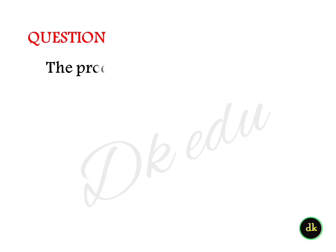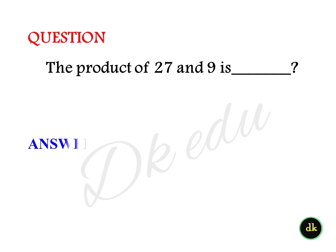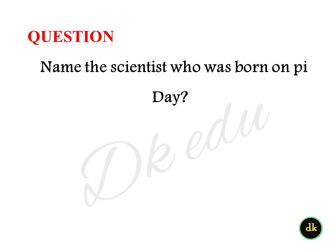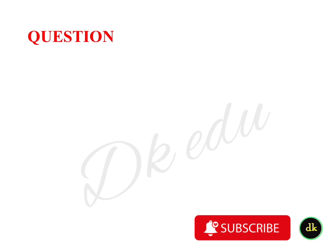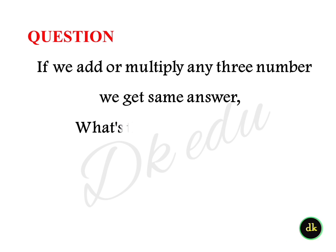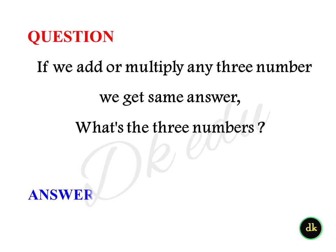The product of 27 and 9 is? Answer: 243. Name the scientist who was born on Pi Day. Answer: Einstein. If we add or multiply any three numbers and get the same answer, what are the three numbers? Answer: 1, 2, and 3.